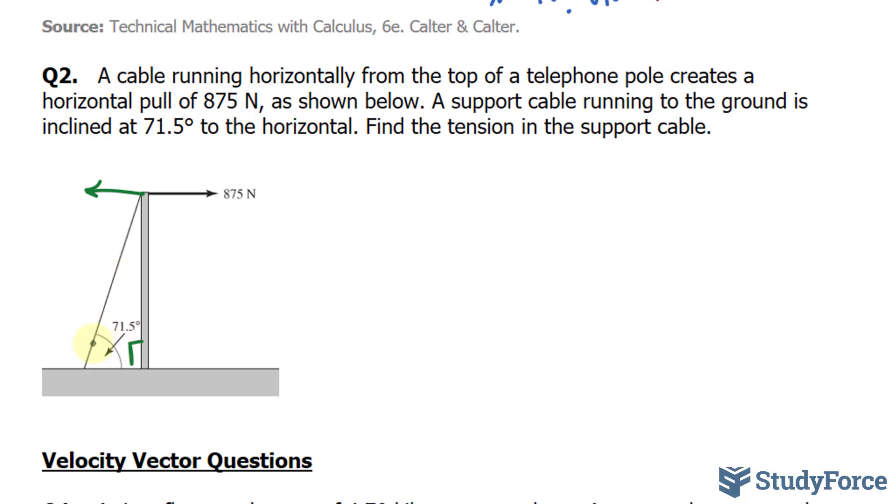All we have to do now is find the hypotenuse. And the trigonometric ratio that relates the adjacent and hypotenuse is once again cosine. So we have cosine of 71.5 degrees is equal to our adjacent value of 875.